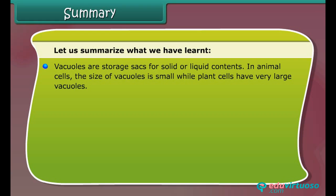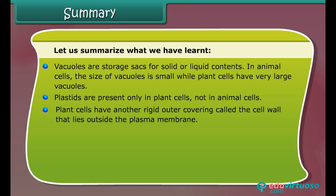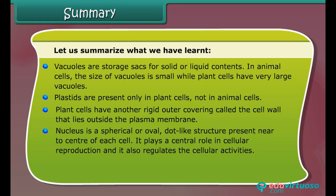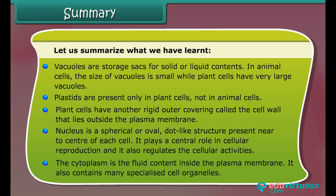Vacuoles are storage sacks for solid or liquid contents; animal cell vacuoles are small, while plant cell vacuoles are very large. Plastids are present only in plant cells, not animal cells. The plant cell wall lies outside the plasma membrane and is mainly composed of cellulose, providing strength. The nucleus plays a central role in cellular reproduction and regulates cellular activities. The cytoplasm is the fluid content inside the plasma membrane and contains many specialized cell organelles.